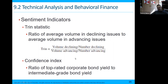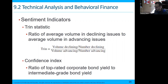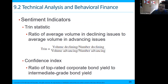The confidence index is the ratio of top-rated corporate bond yields to intermediate-grade bond yields — how likely we think these debt instruments are to go bad. Usually the better the economy, the higher the corporate bond rates and intermediate bond yields, because the likelihood of default is lower. When the economy is doing poorly, you typically see a greater distance between the ratio of top-rated corporate bonds versus intermediate-grade bonds.